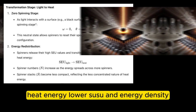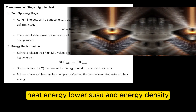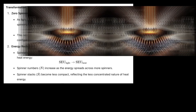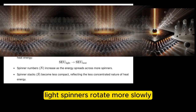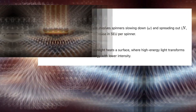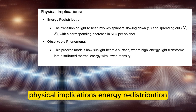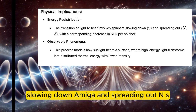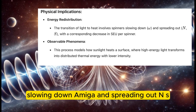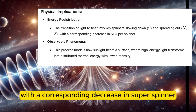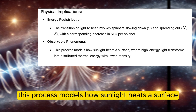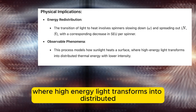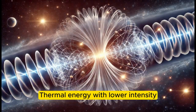Final state — heat energy: lower SU, SEU, and energy density. Heat energy is less concentrated than light, characterized by a lower SU value. Light spinners rotate more slowly. Physical implications — energy redistribution: the transition of light to heat involves spinners slowing down (omega) and spreading out (N, S), with a corresponding decrease in SU per spinner. This process models how sunlight heats a surface, where high energy light transforms into distributed thermal energy with lower intensity.